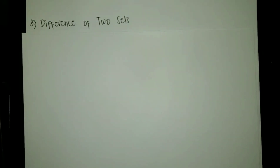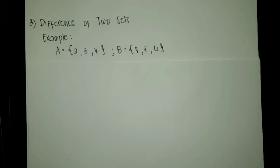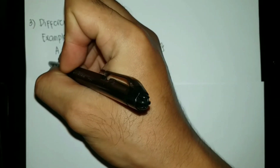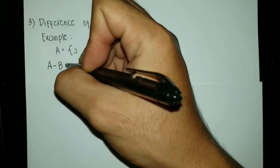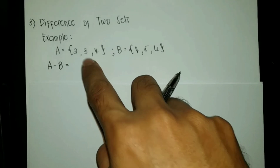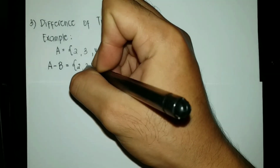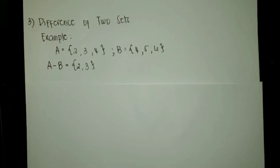The third operation on set is the difference of two sets. In here, we are going to subtract sets. For example, we have sets A and B. Set A with the elements 2, 3, and 4, and set B with the elements 4, 5, and 6. Let us get A minus B. A minus B means the elements of A which are not the elements of B. So we have the set with the elements 2 and 3. That is A minus B.